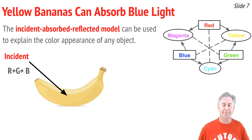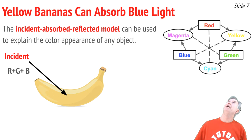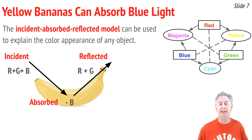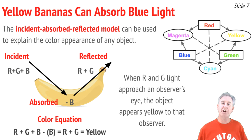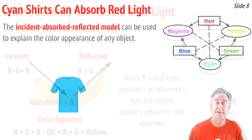Let's explain why a yellow banana looks yellow. We begin with white incident light: R + G + B. It lands on the banana, and the banana absorbs or takes away the blue light. So blue is no longer available for reflecting, but red and green reflect to the observer's eye, which the brain interprets as yellow. The color equation is: R + G + B − B = R + G = yellow.